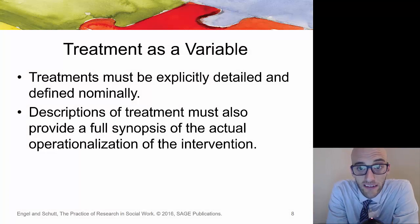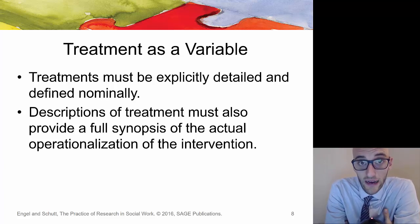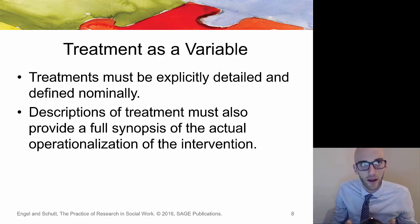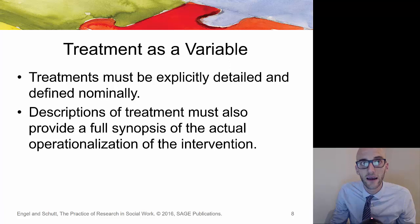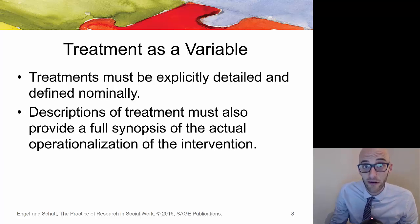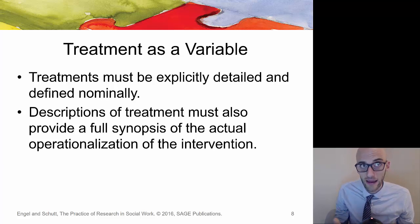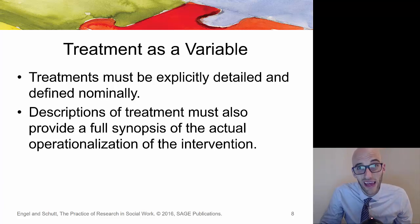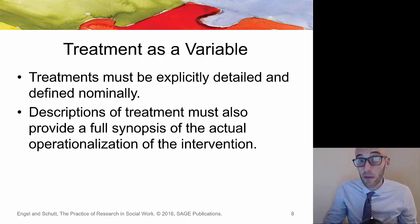When looking at treatment as a variable, treatments must be explicitly and nominally detailed — detailed enough that you can describe the intention of the treatment, the focus of the intervention, and how it was measured. In research, the intervention has to occur as purely as possible within a structured protocol. The description must provide a full synopsis of the operationalization of the intervention in quantifiable terms, because if somebody were to replicate the study they would need to produce similar results — demonstrating the efficacy of the intervention.